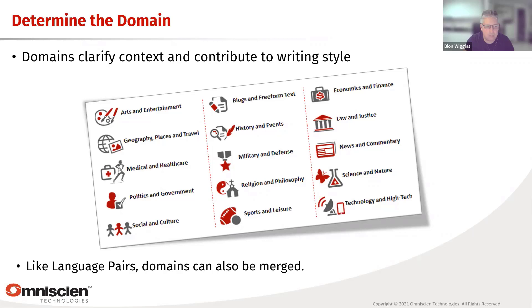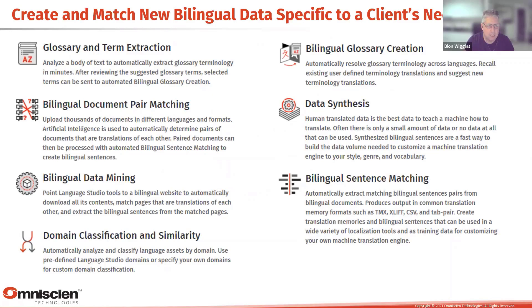We need to determine domains for writing style. Language Studio Version 5 has various domain types, but we're now going to new sub-levels and reclassifying — things like automotive becoming a subcategory of transportation. We also have technologies for glossary and term extraction: pass in a document and a few seconds later you'll have a comprehensive glossary. Then bilingual glossary creation cross-references your terminology with word alignment algorithms against what you already have in your translation memories; if we can't find good matches, we look at alternative sources from our data.